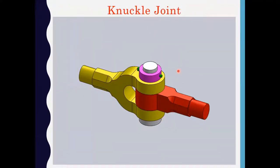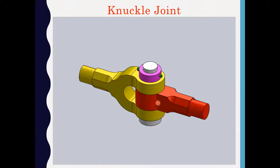This is the 3D view of a knuckle joint. This portion is called as a fork. This red portion is called as a single eye and this is the knuckle pin. The white portion is the knuckle pin. This is a collar and this is called as a cotter split pin, which is inserted to avoid the dropping of the knuckle pin. Knuckle joint is used to connect two rods in tension and some angular misalignment is also compensated by knuckle joints.